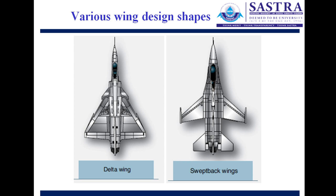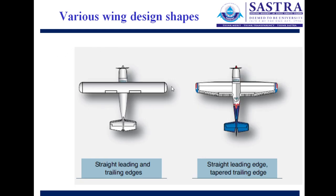In Indian fighter aircraft such as the Su-35, Jaguar, and Mirage, you will find the swept-back wing, where both the leading and trailing edges are swept back. This wing design reduces interference drag and increases maneuverability, enabling aerobatic activities. The simplest wing form, used in general aviation and sports aircraft, is the straight leading and trailing edge — also called a rectangular wing — which is very simple to construct.